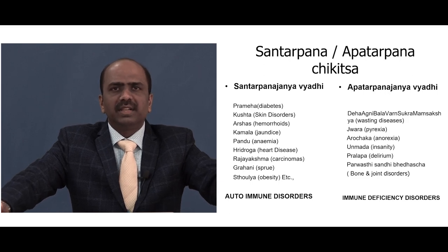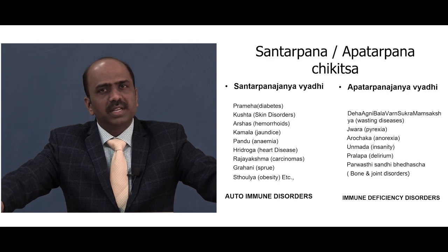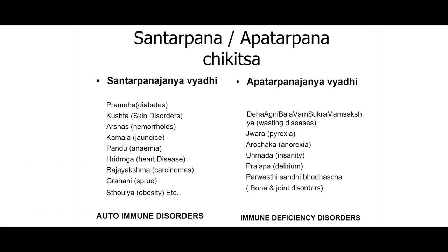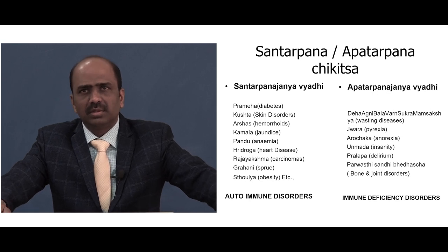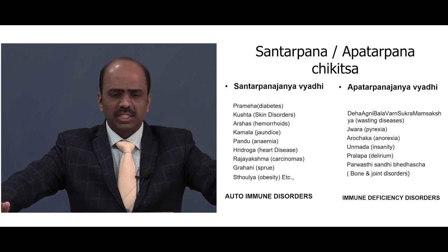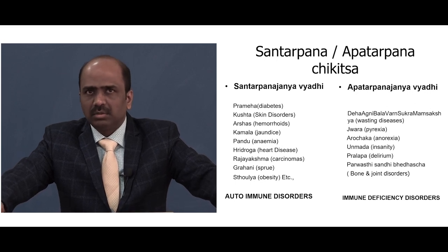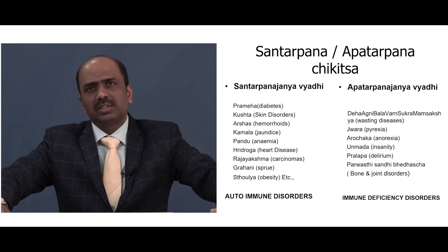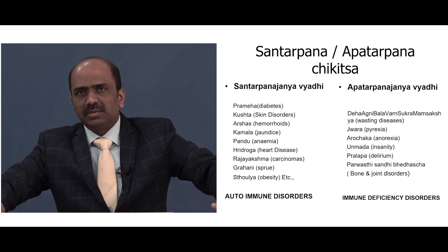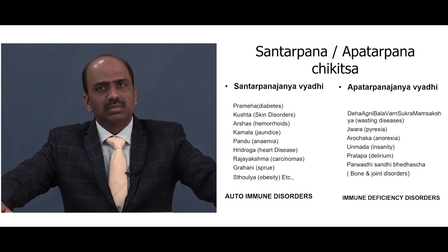Coming to Santharpana and Apatharpana: in Ayurveda, almost all diseases are categorized under these two broader headings. From my clinical experience, in the contemporary era more than 95 percent of diseases are of Santharpana type, and less than five percent are Apatharpana — the latter seen where there is truly deprivation of nutrition. Contemporarily, Santharpana correlates with autoimmune disorders and Apatharpana with immunodeficiency disorders. The treatment principle is: where the cause is Santharpana, give Apatharpana Chikitsa, and vice versa — considering the Prakriti of both the patient and the disease.